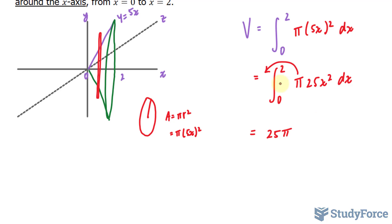leaving us with 25 pi. And now we will take the integral of x to the power of 2. The integral of x to the power of 2 is x to the power of 3 over 3. And we need to find the integral between 0 and 2.